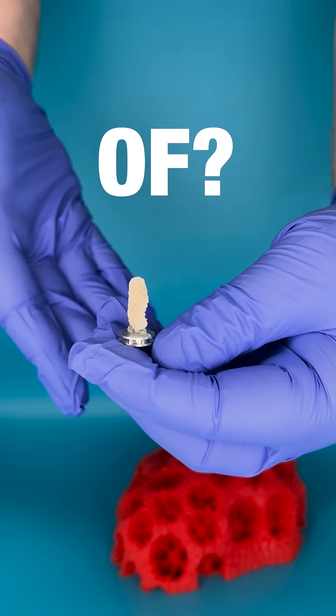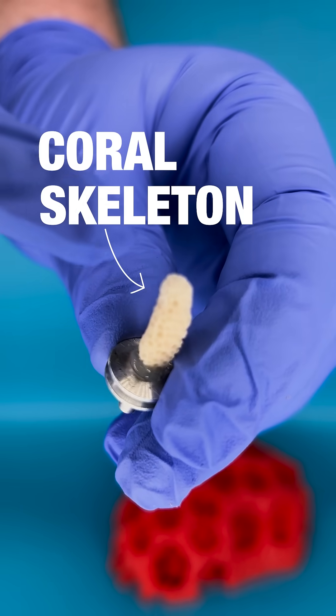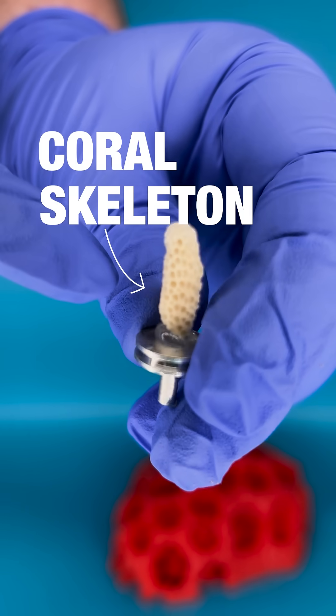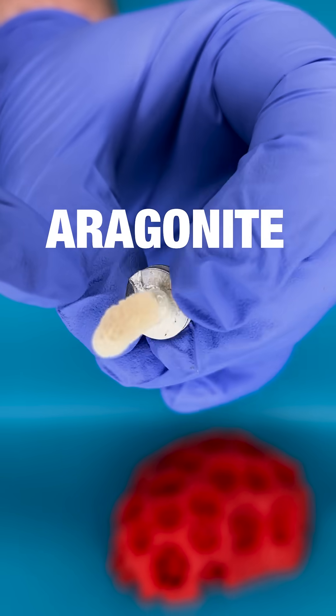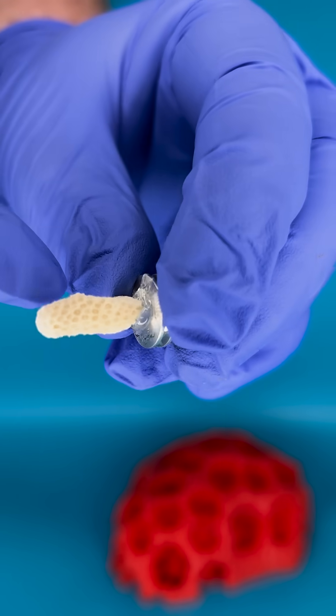But what are their skeletons made of? This is a coral skeleton. They are made of calcium carbonate polymorph called aragonite, and like many ocean creatures, they build their skeletons through a biomineralization process.